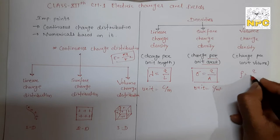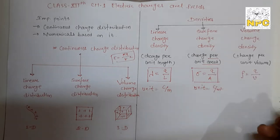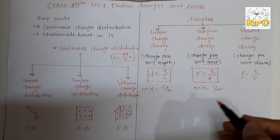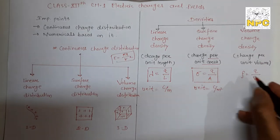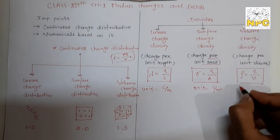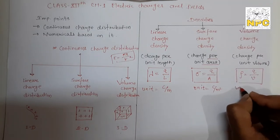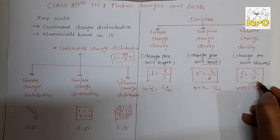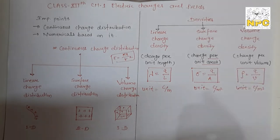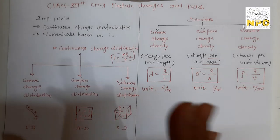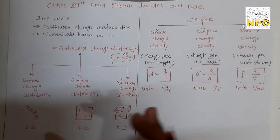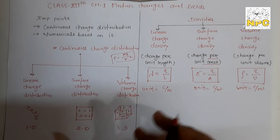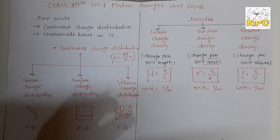Volume charge density is denoted by rho (ρ) and equals total charge divided by volume: ρ = Q/V. The unit is coulombs per meter cubed (C/m³), because volume includes all three dimensions - length, breadth, and height - making it m³. These are the basic definitions that will help in the upcoming numericals.